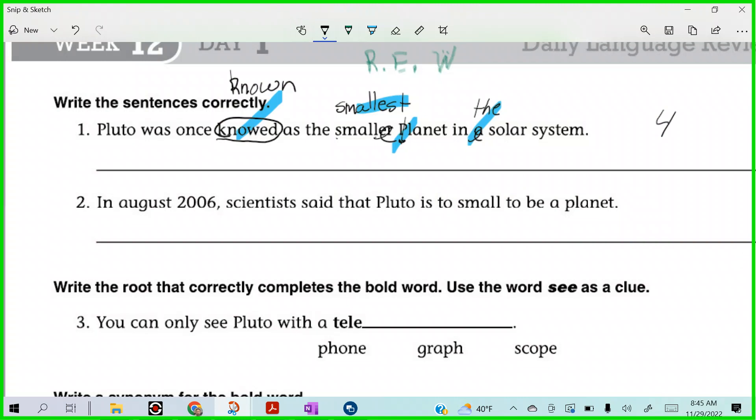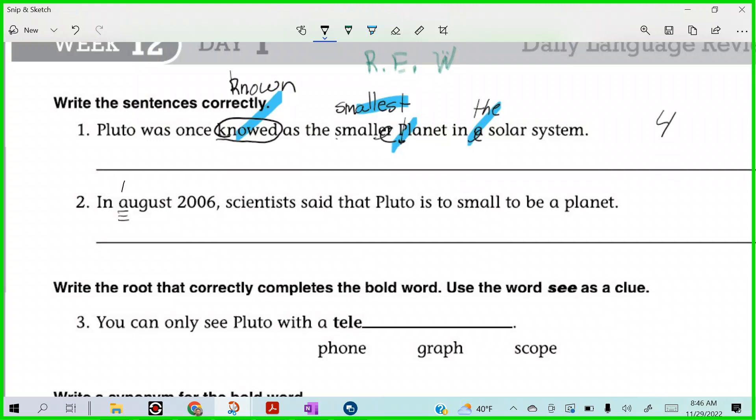Alright, you ready? In August 2006, scientists said that Pluto is too small to be a planet. And that's why my friend Gus from the show Psych always leaves with, Do you hear about Pluto? That's messed up. Because they strip Pluto of planet status. It's not cool. Alright, so what are we going to fix in this one? I see a capitalization error right off the rip. Kelly? Do you see it? In August 2006... Oh, there it is. Should be capitalized.